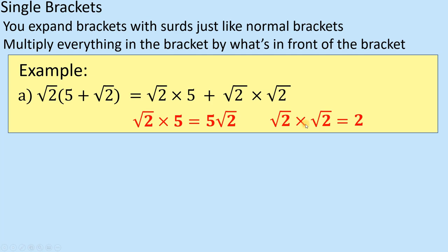So there's a quick way of thinking about that one. If you do square root times the square root, it just becomes the number itself. But also when I do surds, root 2 times root 2 is root 4, which of course is 2. So I'm going to have 5 root 2 plus 2 as my final answer.